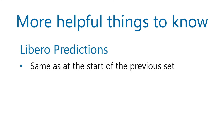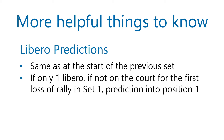VolleyWrite predicts the same Libero replacements as at the start of the previous set. So if the Libero entered for number 4 at the start of set 1, and number 4 is in the back row for set 2 — not necessarily the same position — VolleyWrite will predict the Libero action to replace number 4. At the beginning of a match, when a team has only one Libero designated and the Libero is not on the court for that team's first loss of rally, VolleyWrite puts up a bubble predicting the Libero to move into position 1. However, when a team designates more than one Libero — which can happen in USA Volleyball and FIVB scoring — VolleyWrite can't predict which one would enter the court, so no predictions are shown.